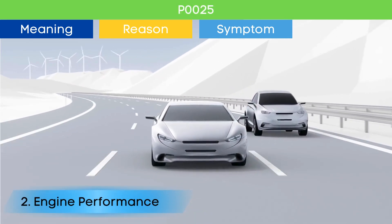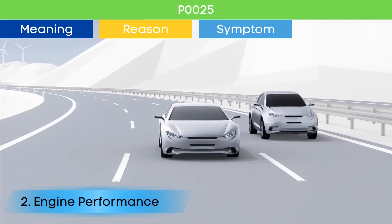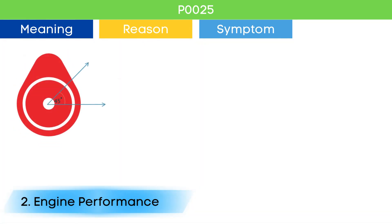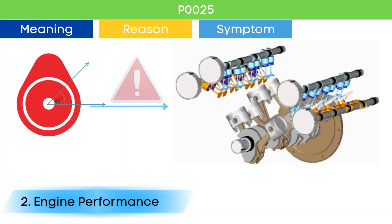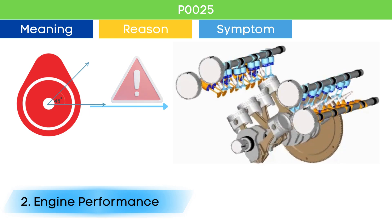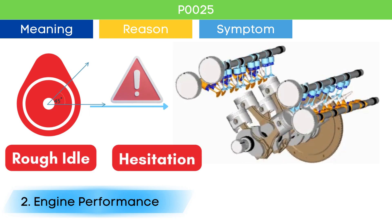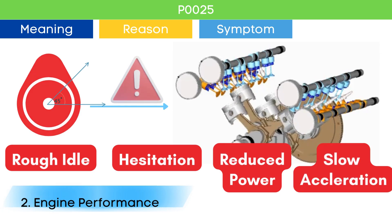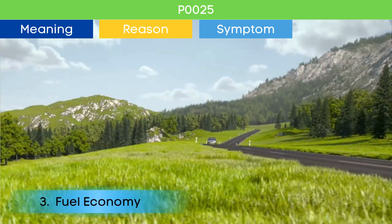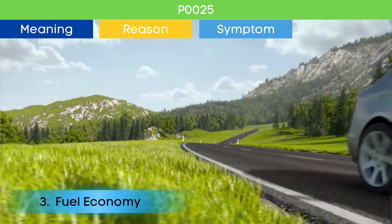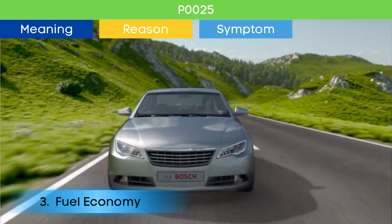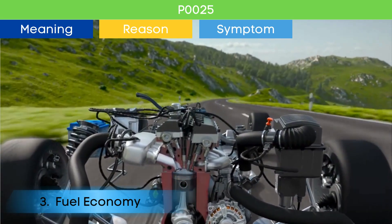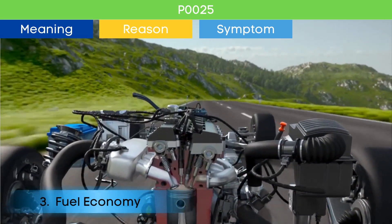Symptom number two: poor engine performance. Problems in the cam position actuator circuit can lead to incorrect cylinder valves opening and closing. This can manifest as rough idle, hesitation, reduced power, and sluggish acceleration. Symptom number three: decreased fuel efficiency. Wrong valve opening and closing due to P0025 lead to incomplete combustion of fuel, which results in poor fuel economy.